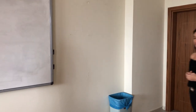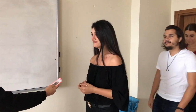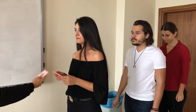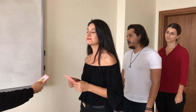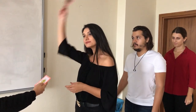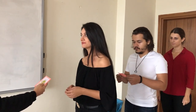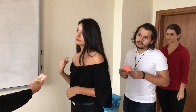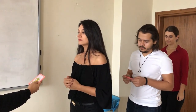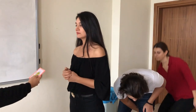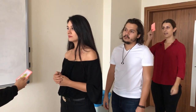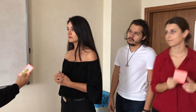Students line up. The first student takes a card from the teacher, says the name of it, and gives the card to the other student over her head. Then the other student takes the card, says the name of it — Monkey — and this time gives it under his leg. And the last student says the name of the card — Monkey — and gives it to the teacher.